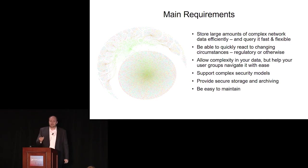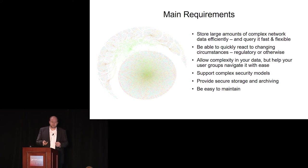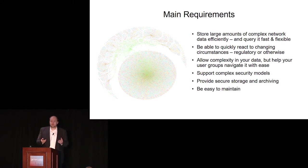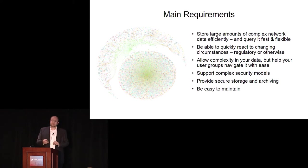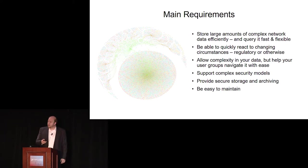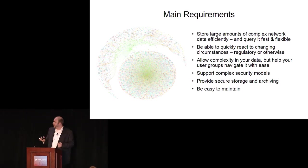Our main requirements are: storing large amounts of complex network data efficiently and querying it flexibly; having a very adaptable system to react to regulatory or other changes; managing high complexity while being able to dial it down for users who are lawyers, not graph experts. We also need complex security models because not everybody should see every bit of data, plus secure storage and archiving — I need to show for at least the last five years that I did my job correctly, and it must be easy to maintain. Why all of these requirements are a perfect fit for Neo4j and Structure, Axel will now elaborate.